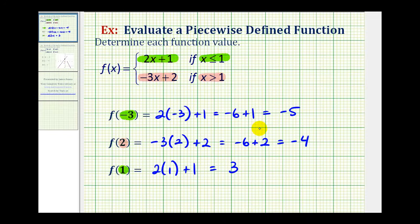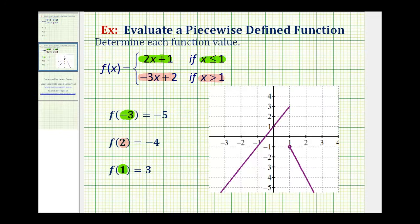Let's also take a look at this graphically. Here's the graph of the piecewise defined function. When x is less than or equal to one, this would be the graph of our function, and when x is greater than one, this would be the graph of our function. Notice we have an open point when x equals one on this piece of the function.